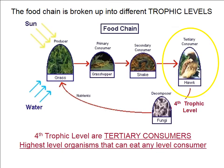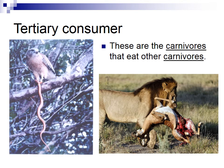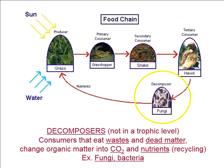The fourth trophic level — tertiary consumers — are the highest level of organisms that can eat any level of consumer. Examples are hawks and lions. Humans are tertiary consumers too, though we're generally not included in food chains or food webs because we go pretty much everywhere. Tertiary consumers are essentially the top predators — carnivores that eat other carnivores.